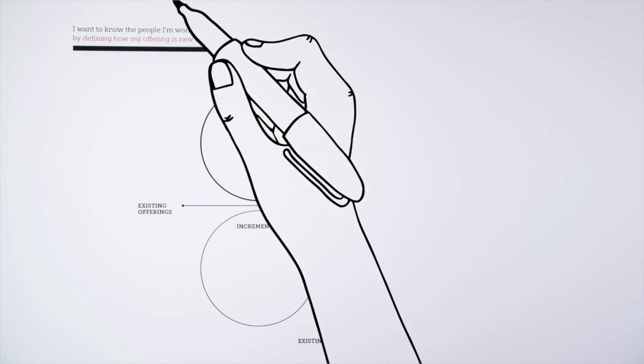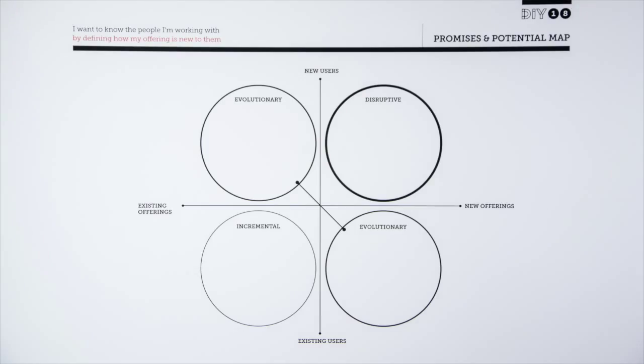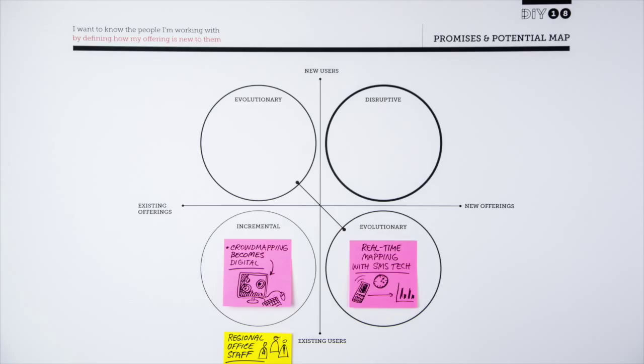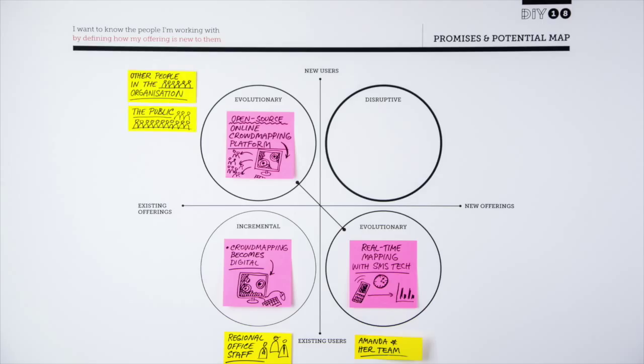Amanda decides to use the Promises and Potential Map. They think about improvements to existing processes for current users, possible new offerings for existing users, bringing the existing process to new groups of users, and something radically new with a new group of users.